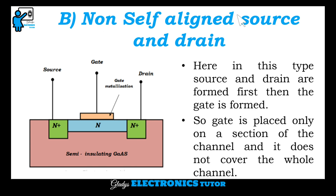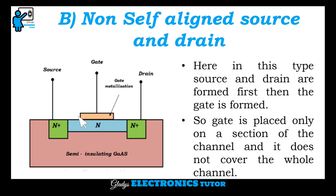Next is non-self-aligned source and drain. In this type, the source and drain are formed first, then the gate is formed. So the gate is placed only on a section of the channel and does not cover the whole channel.